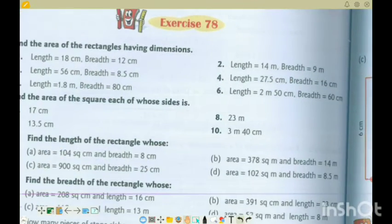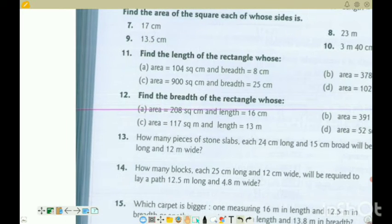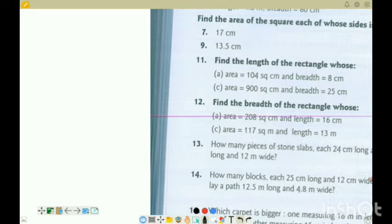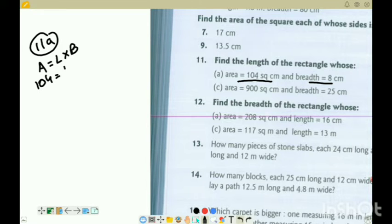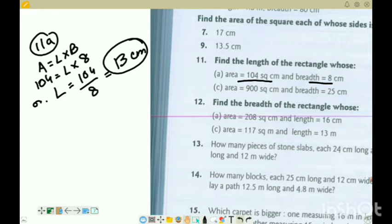Next we have question number 11: find the length of rectangle. Area is equal to length into breadth, so length equals area divided by breadth. Question 11a: area is 104 and breadth is 8, so length equals 104 divided by 8. 104 divided by 8: 8 goes into 10 once, carry 2, 24, 8 times 3 is 24. So 13 centimeter will be the length.